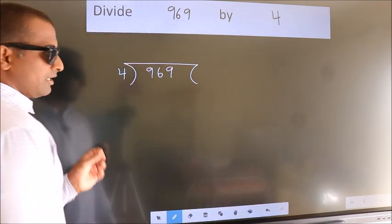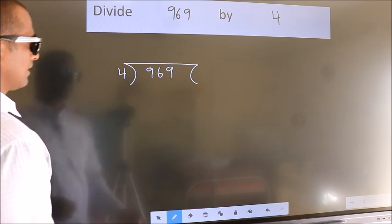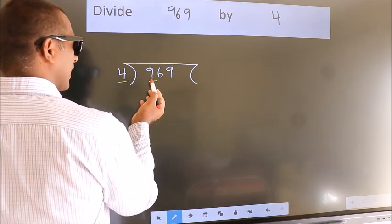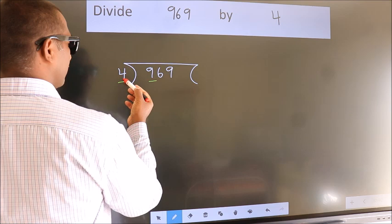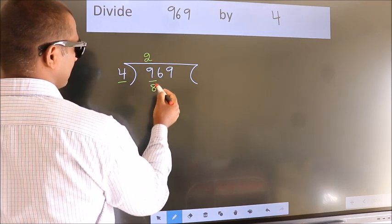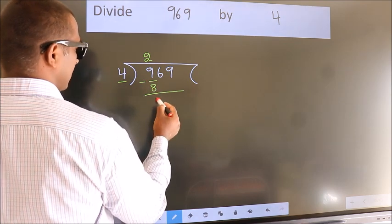This is your step 1. Next, here we have 9, here 4. A number close to 9 in the 4 table is 4 times 2 equals 8. Now we should subtract. We get 1.